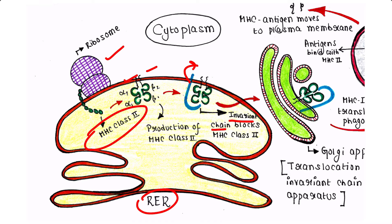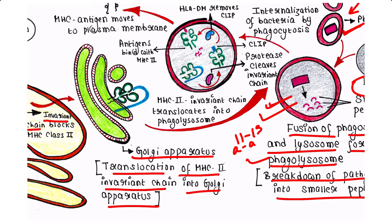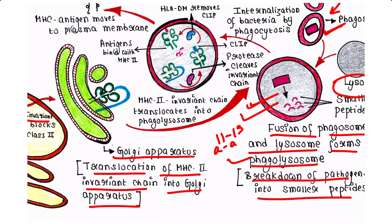The invariant chain also facilitates the export of MHC class 2 molecules from the RER to the Golgi apparatus. So translocation of MHC class 2 along with the invariant chain occurs into the Golgi apparatus. From the Golgi apparatus, the complex then moves toward the phagolysosome. The MHC class 2–invariant chain complex translocates from ER to Golgi and then from Golgi into the phagolysosome.